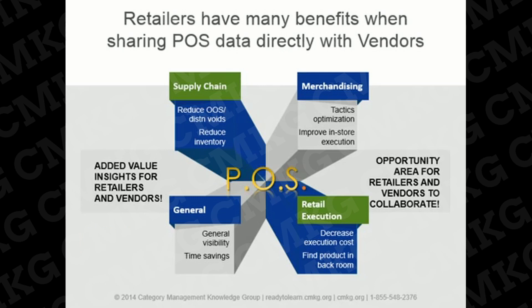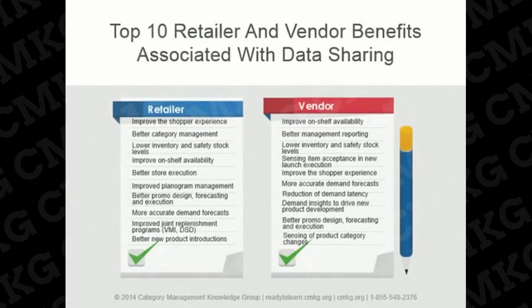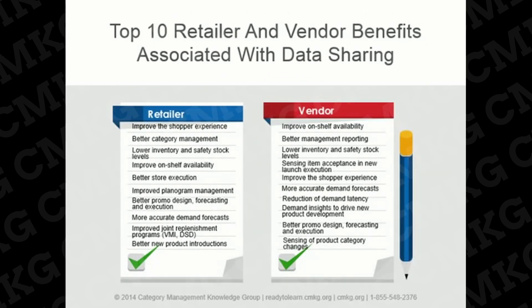Retail execution benefits like decreased cost of execution and finding needed product in the back room, and lastly general cross-business benefits like general visibility and time savings. In net, retailers sharing their POS data with vendor partners can create added value for both parties and help move toward more collaborative efforts. A recent study uncovered the top 10 benefits for retailers and vendors associated with data sharing. Improving shopper experience, better reporting and category management, and lower inventories are the top three benefits identified by both retailers and vendors.